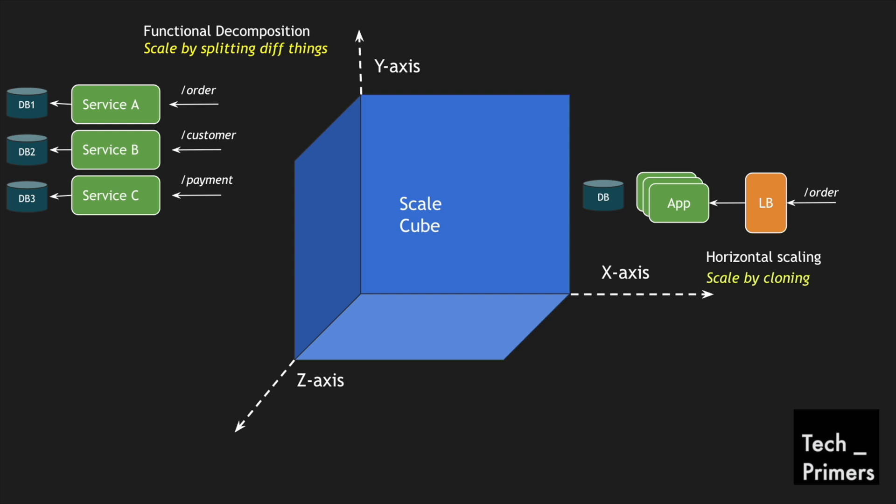So compared to the x-axis where we had 'scale by cloning' — creating an exact copy of the application into multiple instances — here we split the application into multiple domains or functions: order, customer, and payment. These are different functions, and we have split the individual application into multiple services and scaled them independently. This is another way in which you can scale your applications.